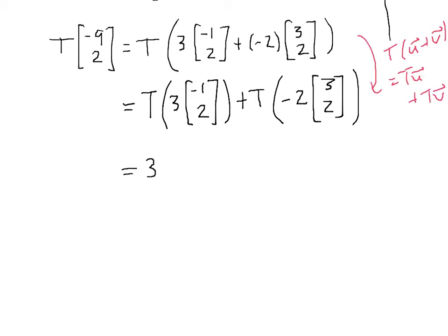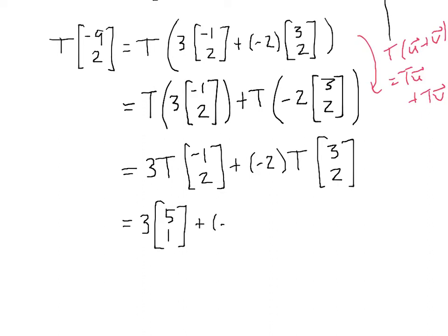So we now get 3 times T of [-1, 2] plus -2 times T of [3, 2]. And those are the two vectors that we were given the action of T on. So we were given that T of [-1, 2] equals [5, 1], and T of [3, 2] equals [-2, 4].